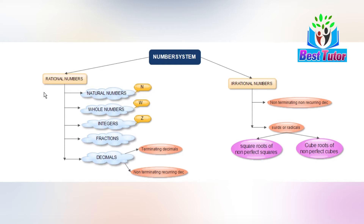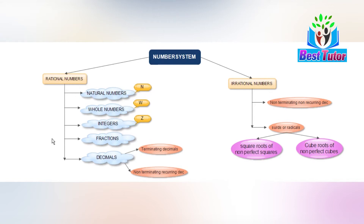Every natural number is a rational number. For example, 5 can be written as 5 by 1, which is in the form of p by q, so 5 is a rational number. In that way, all natural numbers are rational numbers. Similarly, all whole numbers and all integers are also rational numbers, and all fractions where the denominator is not equal to 0 are rational numbers.